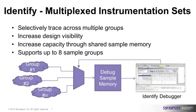Debug is inherently an iterative process since prior to running a design you can't really know ahead of time where bugs will occur. So a common use model is to over-instrument the design for maximum coverage. Identify's debugger sample groups lets you multiplex several sample groups to the output of the debugger, giving you over-instrumentation capability without increasing data storage requirements.